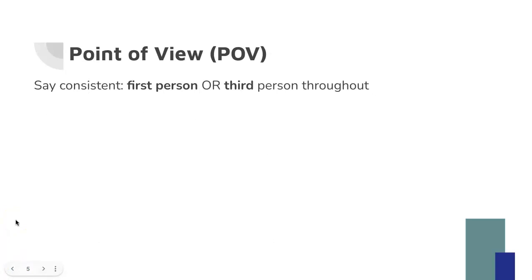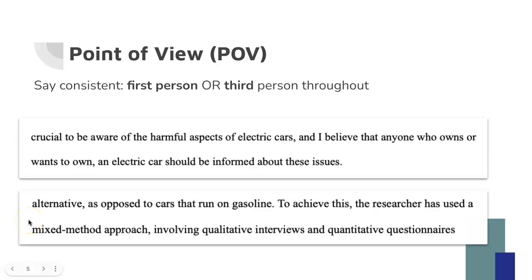Another rhetorical aspect that students often struggle with is point of view, or POV. With academic papers like this you'll generally see first person or third person. Second person is not going to pop up because there's no real reason to address the reader directly. First person is when you're using 'I' or 'me,' and this is becoming more and more common in academic research. It used to be that you only used third person or passive voice, but nowadays it's totally alright to use 'I' as long as you're using it appropriately.